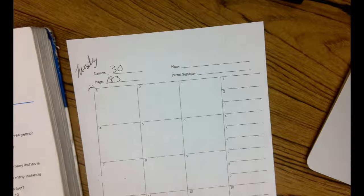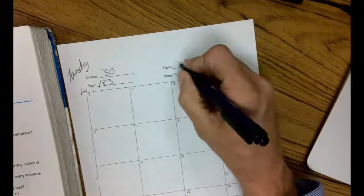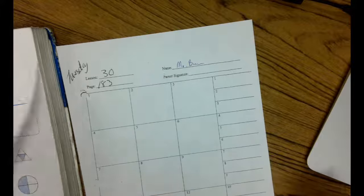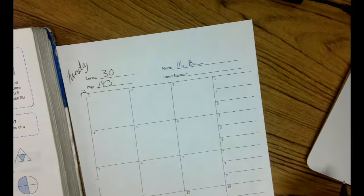All right, guys. Lesson 30, page 183. It's Tuesday. Start with your name. Let's get some help on this assignment here. We're working on our fractions, decimals, and percents, and how those work together.